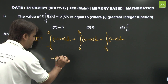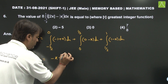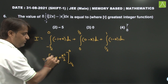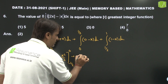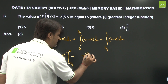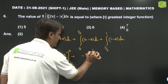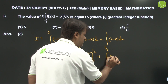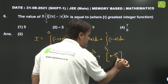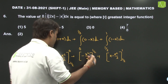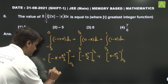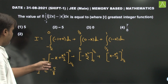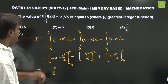Integrating each part: first part gives [minus x plus x squared/2] from minus 1/2 to 0; second part gives [minus x squared/2] from 0 to 1/2; third part gives [x minus x squared/2] from 1/2 to 1. Replacing limits gives minus 5/8. So I equals minus 5/8, and therefore 8I equals minus 5.